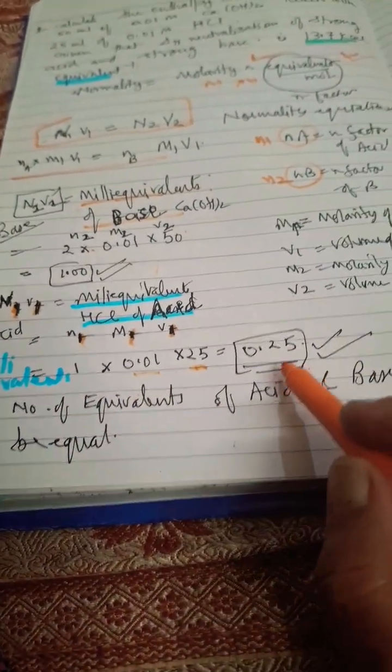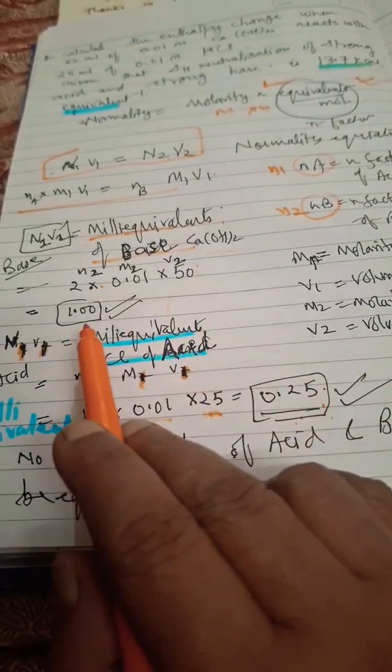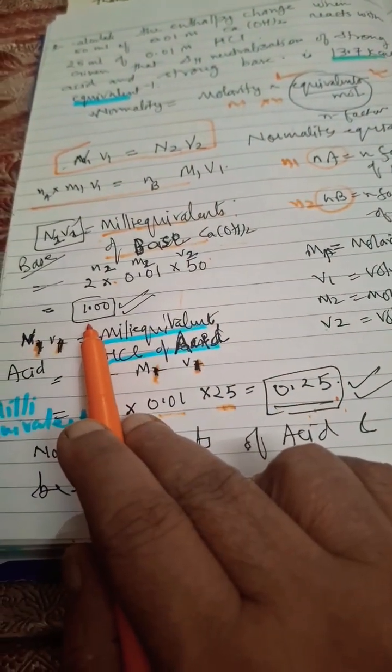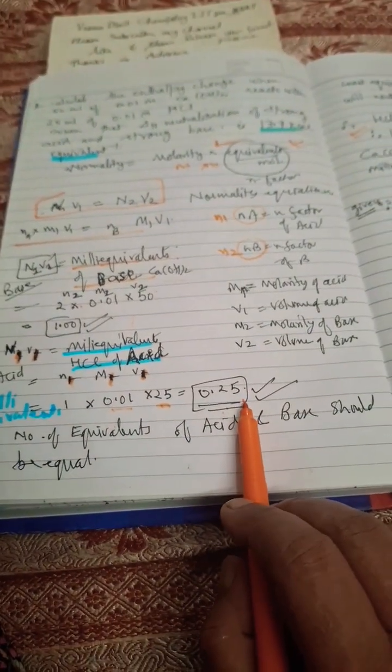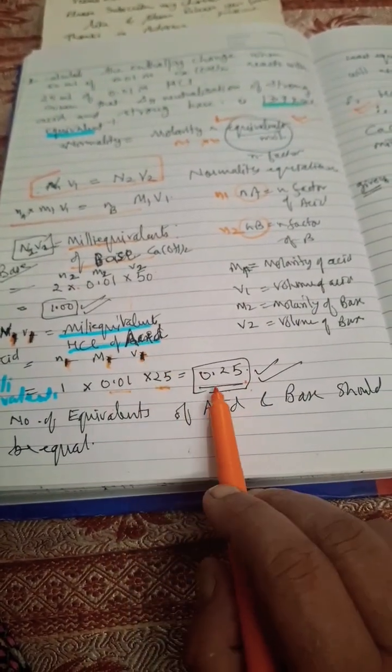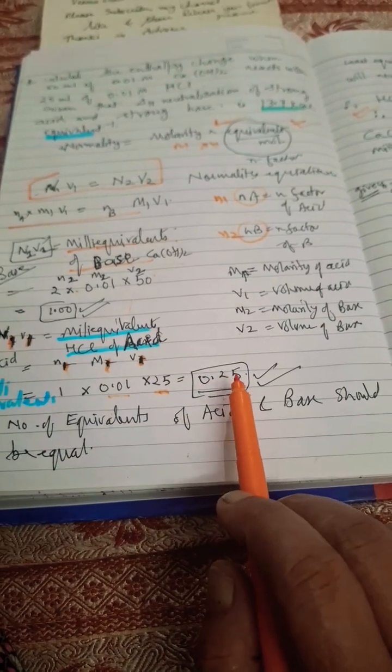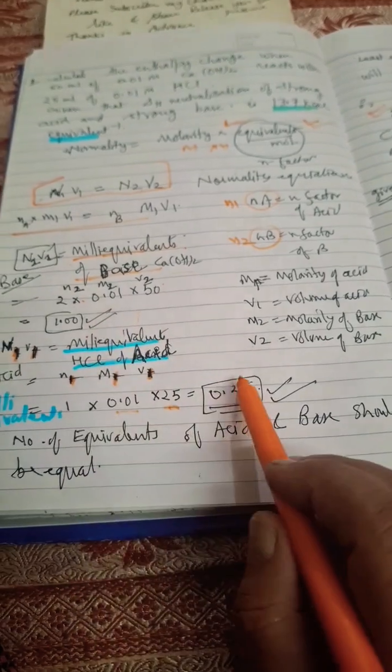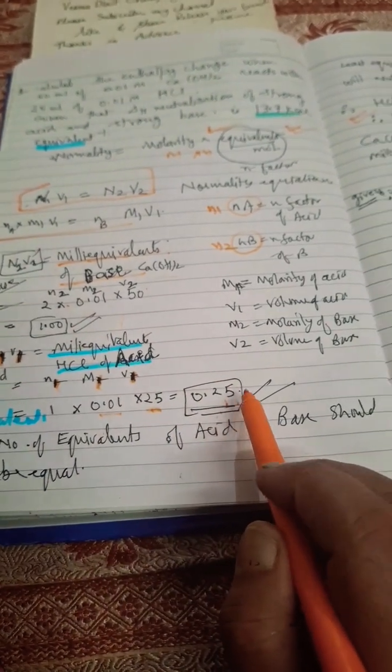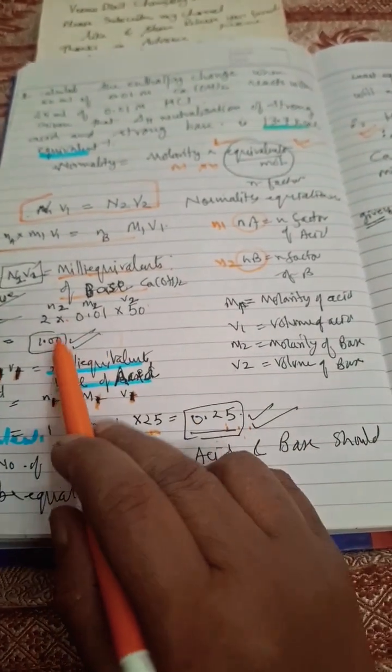Here 0.25 milliequivalents, here 1 milliequivalent. Which is least? 0.25 is least, means it is completely consumed. For neutralization reaction, the number of milliequivalents should be the same, so only 0.25 of calcium hydroxide is used up. So this is completely used, this is limiting reagent, and this is excess reagent.